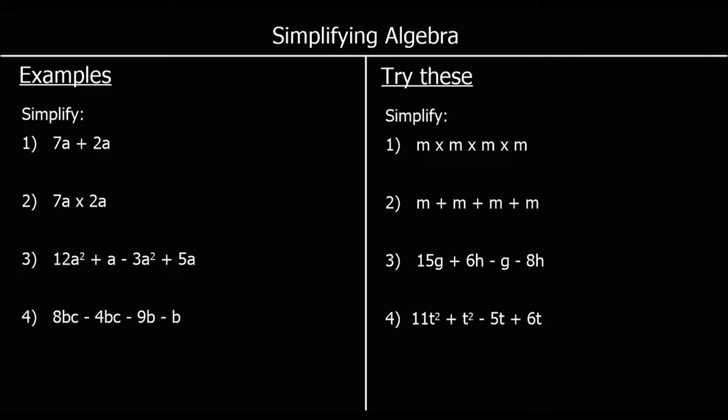Simplifying algebra. So the first question, 7a plus 2a. So a just means a number that we don't know. It can be any number. So if we've got 7a's plus 2a's, what do we have? We've got 7 lots of a number plus 2 lots of a number. That means we've got 9 lots of a number. If you've got 7 of something and 2 of something, you've got 9 of it.